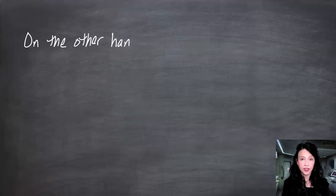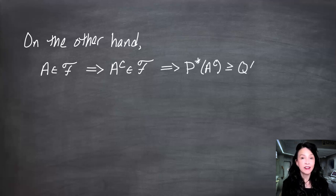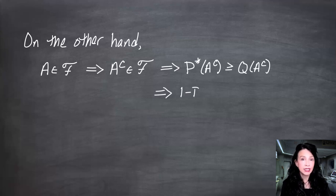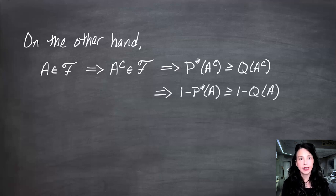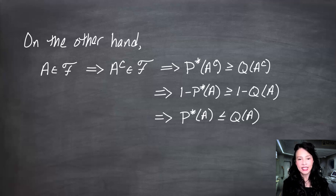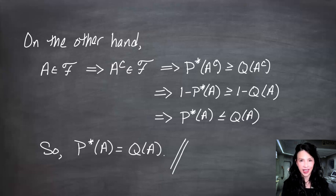On the other hand, suppose A is a set in the sigma field F. Then A-complement is also in F because F is a sigma field. From the previous argument, P-star of A-complement is greater than or equal to Q of A-complement. Both P-star and Q are probability measures on F, so P-star of A-complement equals one minus P-star of A, and Q of A-complement equals one minus Q of A. Moving things around, this implies P-star of A is less than or equal to Q of A. Combined with what we showed before — that Q of A is less than or equal to P-star of A — we conclude P-star of A equals Q of A for any A in F. The result is proven.